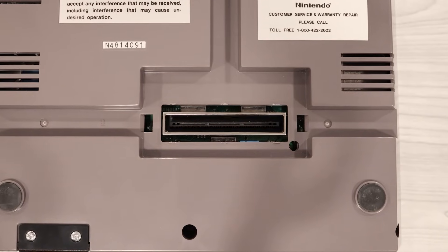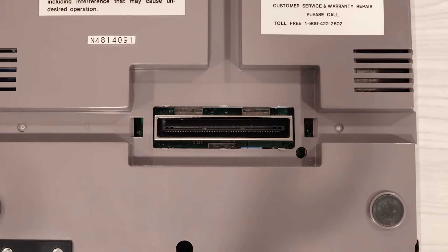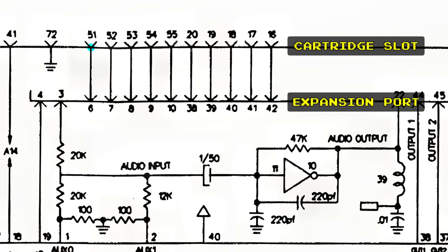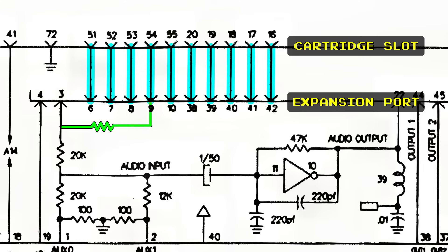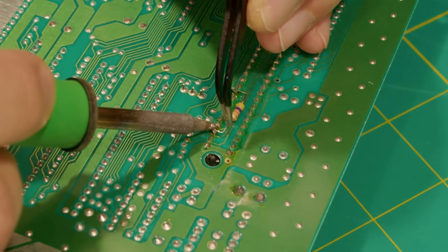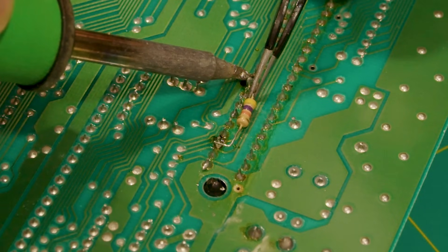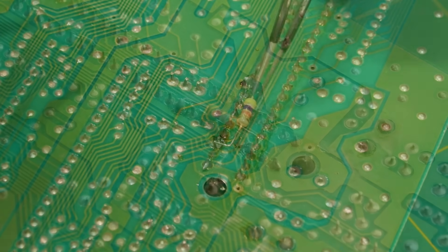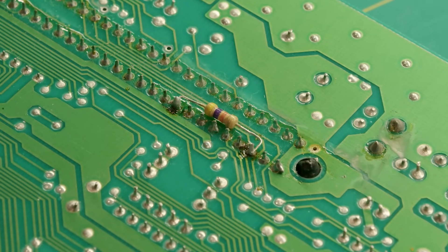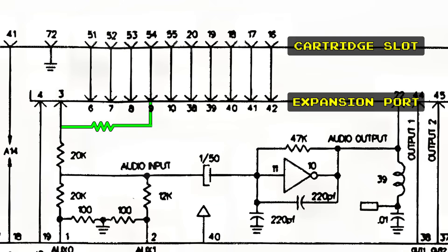Fortunately, there's a simple mod you can perform on that unused NES expansion port. It turns out that 10 of the pins from a 72-pin NES cartridge connect directly to it. So all you need to do is connect one of those pins from the cartridge to the expansion port's audio input pin. When you do that, the cartridge audio is routed and mixed back into the NES audio signal. To perform this mod, you just need to solder a 47-kilohm resistor between pins 3 and 9 on the expansion port. That's all you need to mix the signal, so you could stop there.